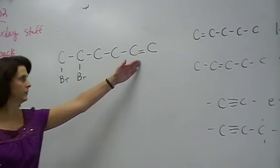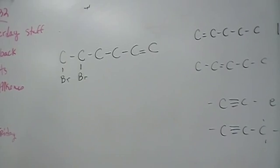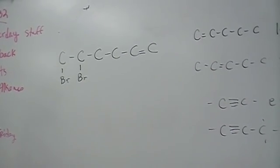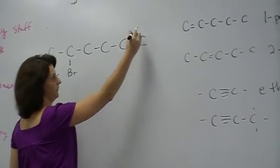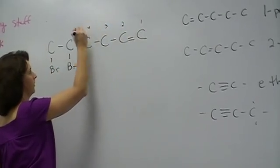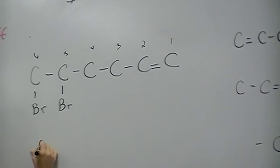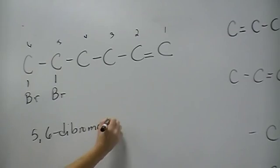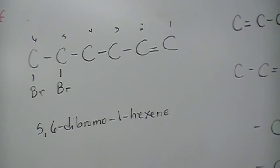There's six carbons. The double bond is right here. If I gave you rules, which I think I'm just going to give you examples to list the rules because most of the rules are the same. The number one rule is you start from the side the double bond is closest to. So that means this is number one. One, two, three, four, five, six. So the name of this guy is going to be 5,6-dibromo-1-hexene.